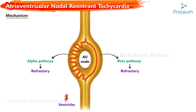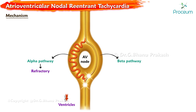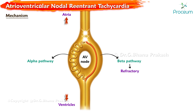Now both pathways are under refractory period. Because the alpha pathway has a shorter refractory period, it is ready to take another impulse while the beta pathway is still refractory. The impulse travels down the alpha pathway and reaches the terminal portion of the AV node. By that time, the beta pathway is out of refractory, so the impulse travels down to the ventricles and ascends upwards towards the atria through the beta pathway, causing both atria and ventricles to contract at the same time. When the ascending impulse reaches the superior portion of the AV node, the alpha pathway is out of refractory and the impulse travels down the slow pathway, creating the re-entry circuit.